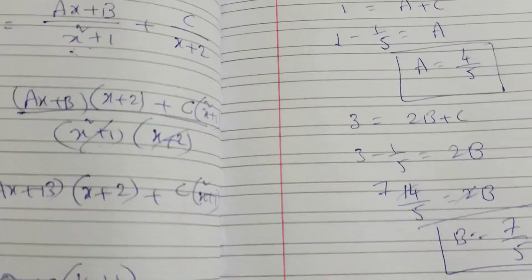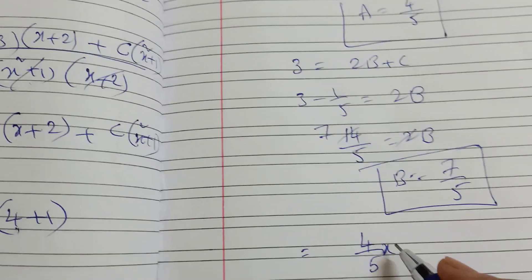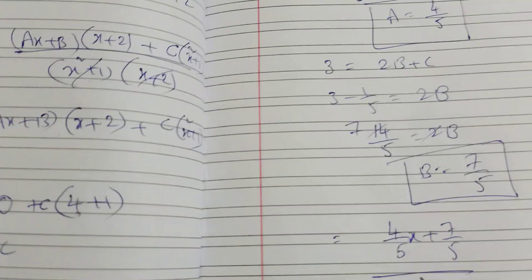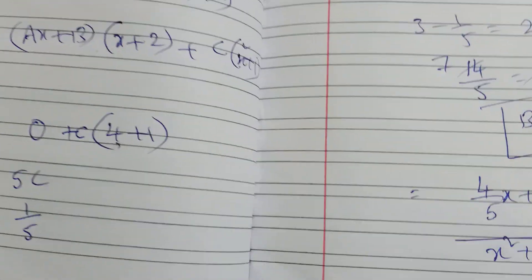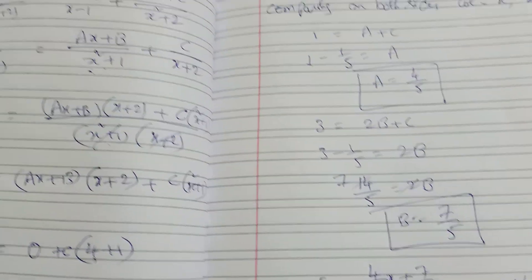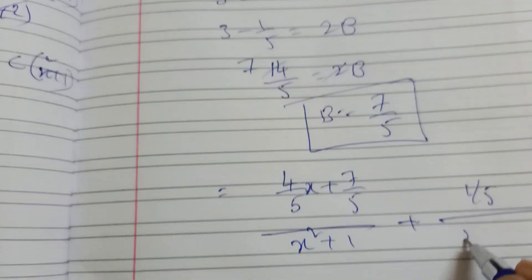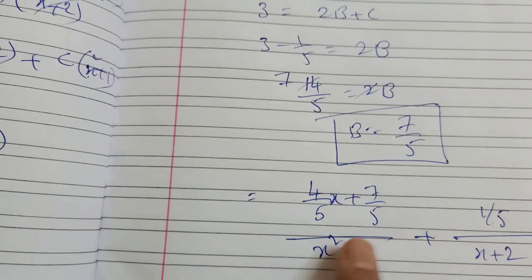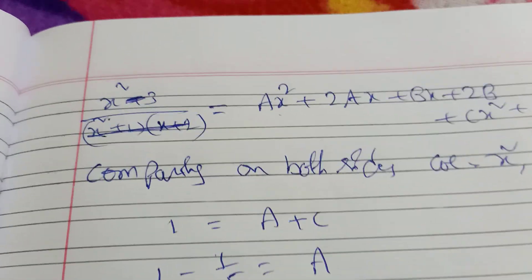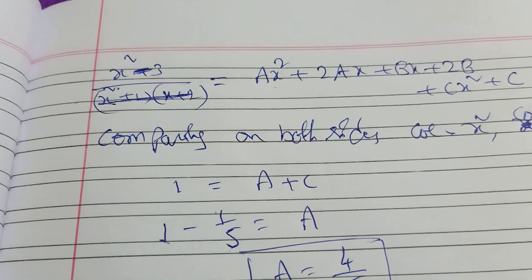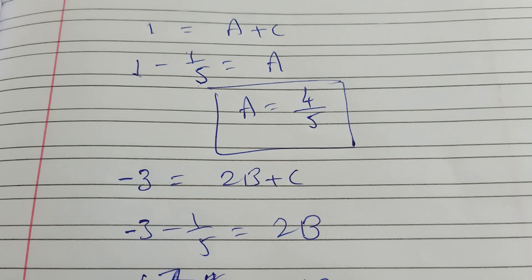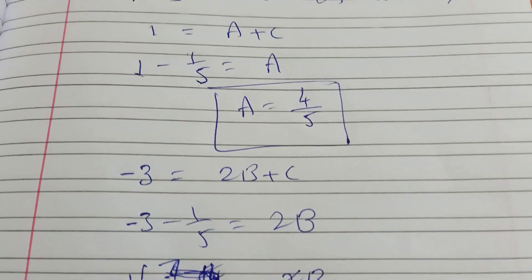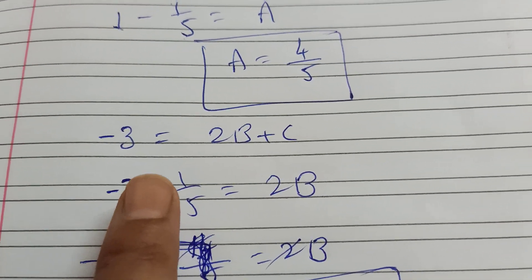Applying the values A equals 4 by 5, B equals 7 by 5, and C equals 1 by 5: the partial fraction is (4x by 5 plus 7 by 5) divided by (x squared plus 1), plus (1 by 5) divided by (x plus 2).